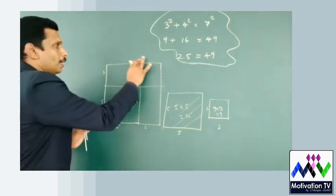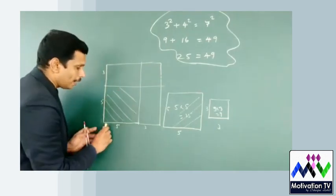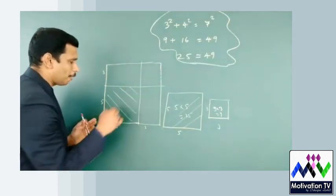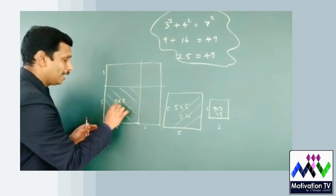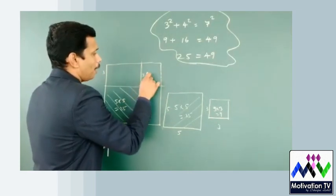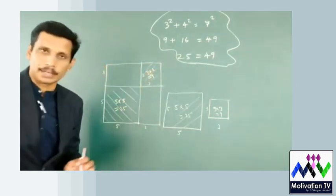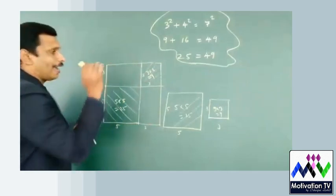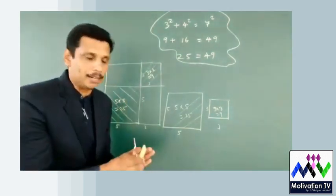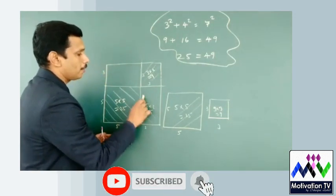This is a square. In this square there is a square within a square. This small square is 3 units, so the square area is 3 times 3 — 9 square units. It is 3 and 3 and 4 square units. This square area is 15 square units.